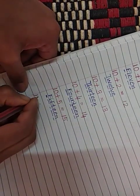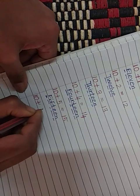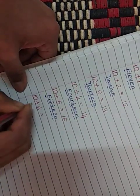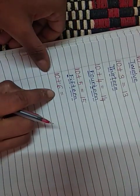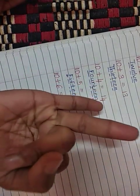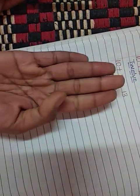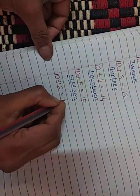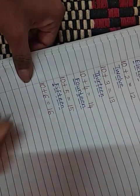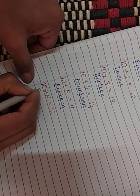So just see here 10 plus 6 is equal to. So count after 10, 6 times: 11, 12, 13, 14, 15, 16. So how much children? 16. Now the same 16 which we will be writing here.